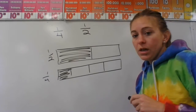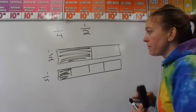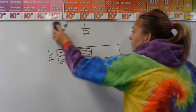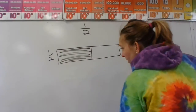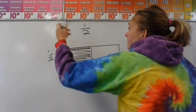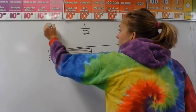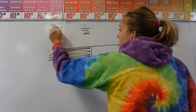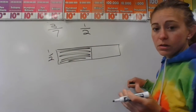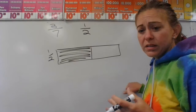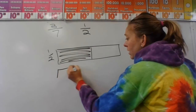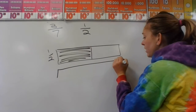However, sometimes you get fractions like three sevenths. Some fractions are so close to one half that it's a little harder, especially if it's an odd number.